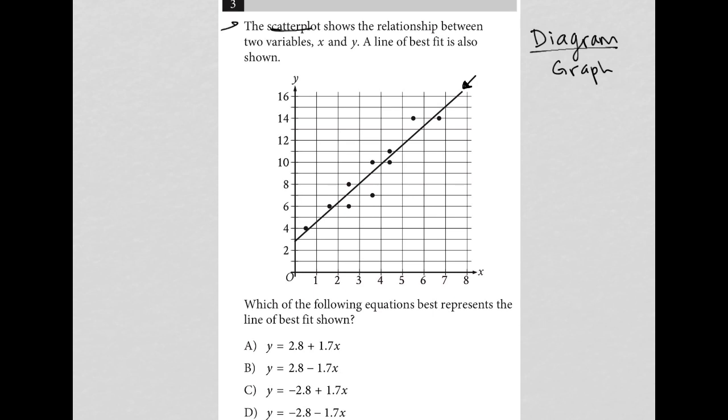So the question here says the scatter plot shows the relationship between two variables x and y. A line of best fit is also shown, which we see. The question goes on to say, which of the following equations best represents the line of best fit? Okay, so anytime I see equations for a line, I'm thinking y equals mx plus b. That's just standard for this test.